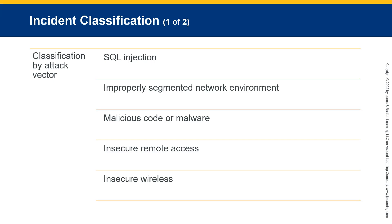Insecure remote access involves gaining access through remote services such as point-of-sale devices, vendor networks, and employee remote access tools. Insecure wireless attacks involve accessing the network through wireless points of entry. The wide variety of wireless-ready network devices — including copiers, fax machines, inventory systems, point-of-sale terminals, and web cameras — has increased risk in recent years.